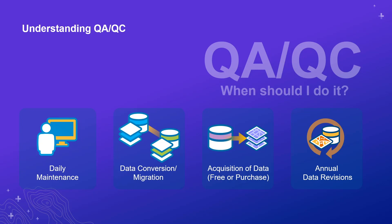Whether you're purchasing data or downloading it for free from online resources, you want to make sure that data is also fit for use — inspect it to make sure it has the things you need to do your job. You may also be getting annual data revisions, such as annual updates of the parcel database from the county. You want to make sure there haven't been any major changes to that data and it's still in the format and contains the information that you need.